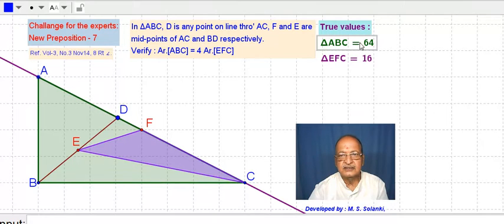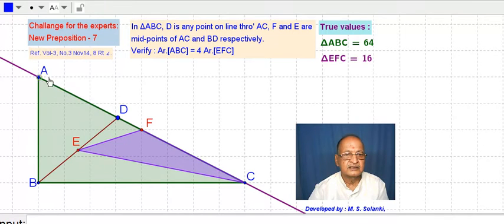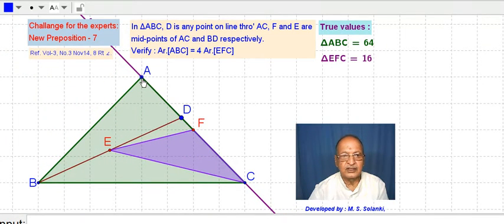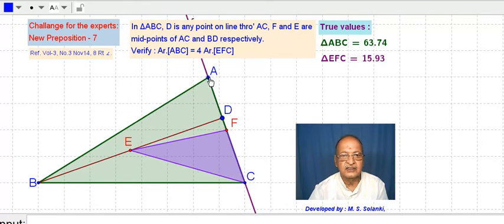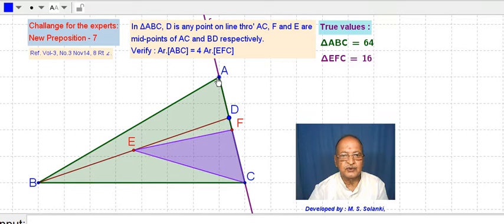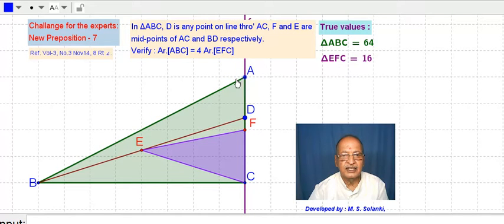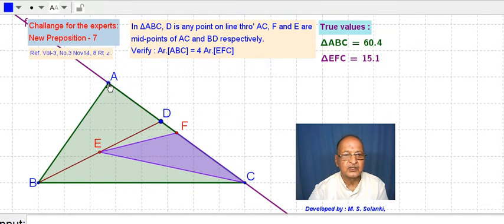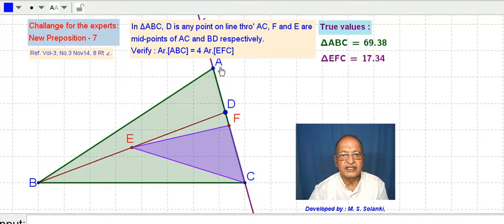8 into 8, 64. So 64 square unit area and EFC is 16 units. Now on this horizontal line at every point this value will be 64. Value of area ABC will be 64.